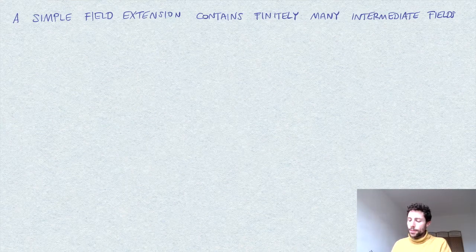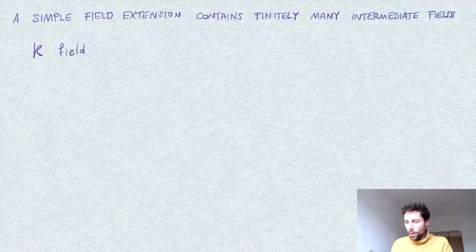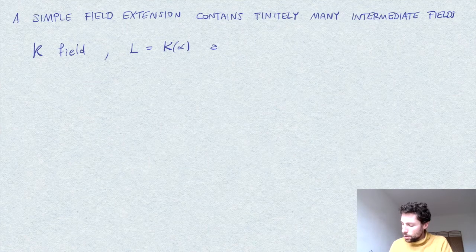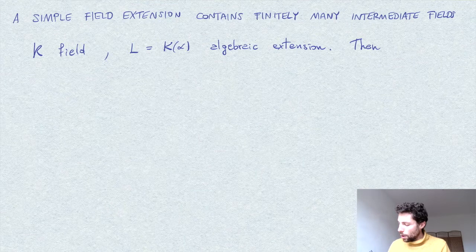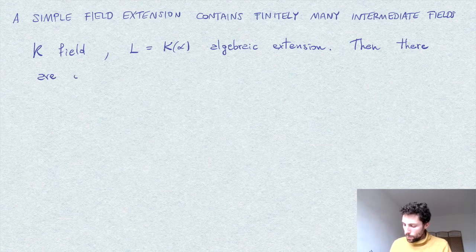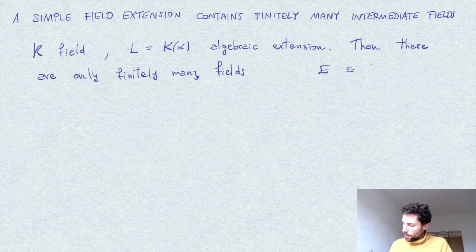Let's prove the fact that in a simple field extension there exist only finitely many intermediate fields. More precisely, suppose k is a field and we have a simple algebraic extension of the form k(α) = L. Then the statement is that there are only finitely many fields E between k and L.